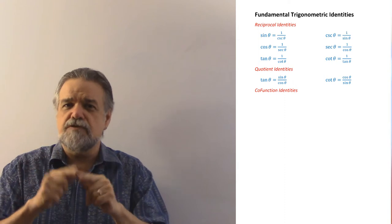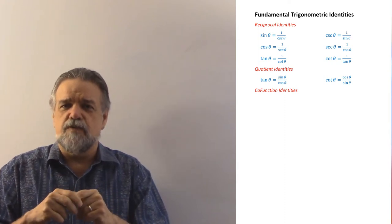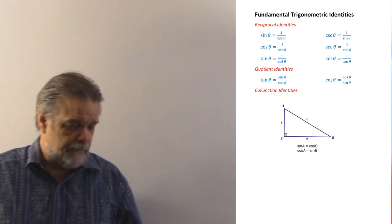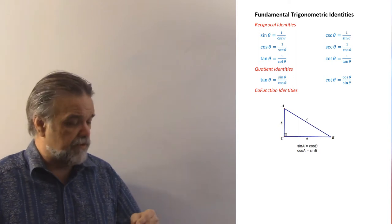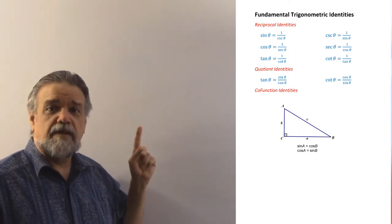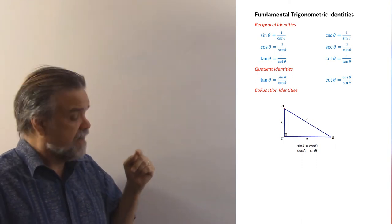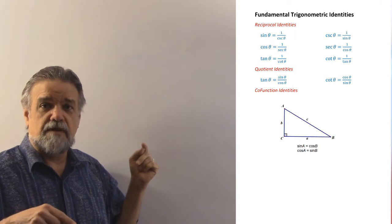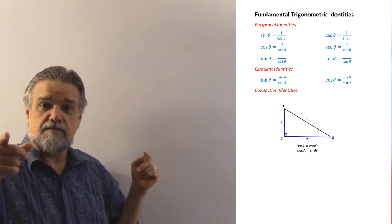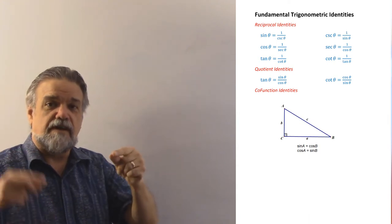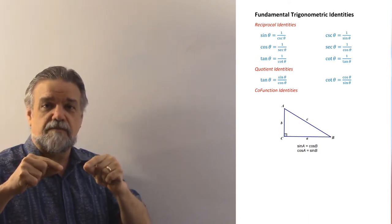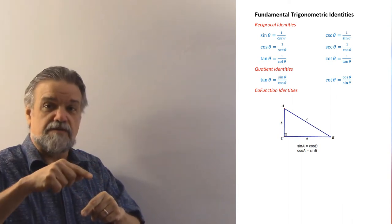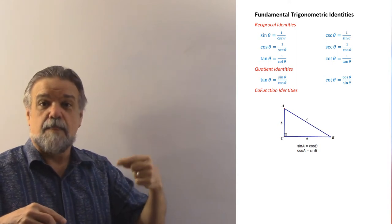Now the co-function identities — we mentioned these once when we were first looking at right triangle trigonometry. Let's take a look at a right triangle again. From this right triangle, the sine of angle A is A over C — the opposite over the hypotenuse. The cosine of angle B is also A over C. So the sine of angle A and the cosine of angle B are the exact same ratio. Likewise, the sine of angle B is B over C, and the cosine of angle A is B over C.